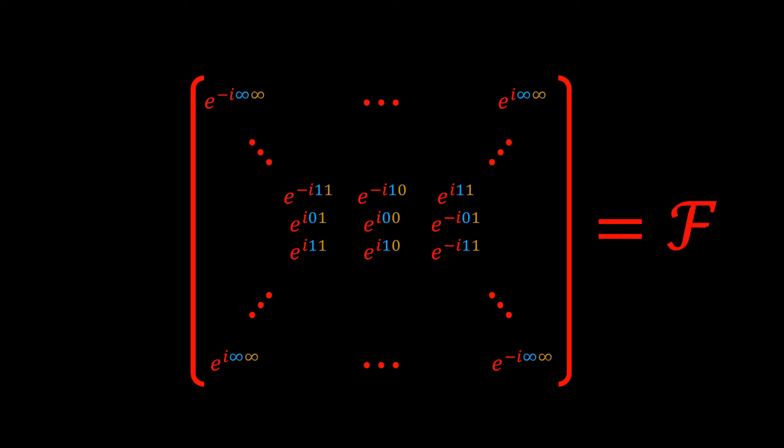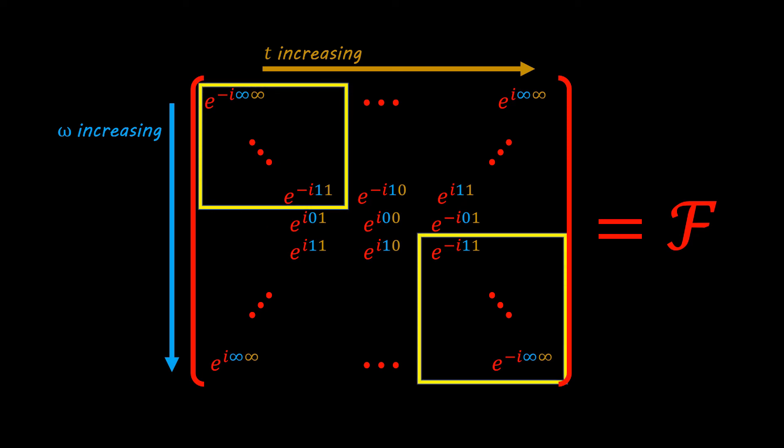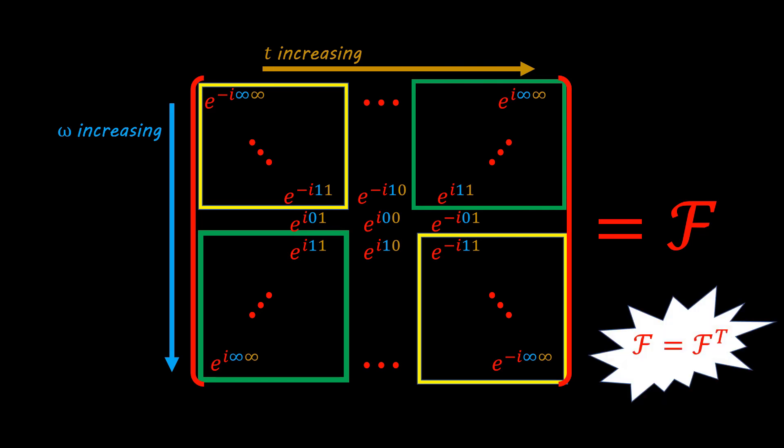Let's call this matrix F. Now that we have explicitly written out more of the values, we can see that time increases as we go from left to right and frequency increases as we go from top to down. In the exponents, I have written the frequency values in blue and the time values in gold. Another very interesting observation of this matrix you might notice is that these two quadrants are sort of reflections of each other. They contain the same values. You can see in the corners that they have the same combination of infinities. The same applies for these other two quadrants. These symmetries indicate that F is a symmetric matrix, where F is equal to F transpose.